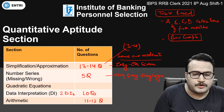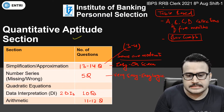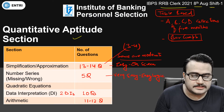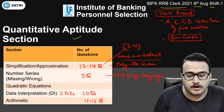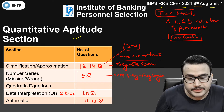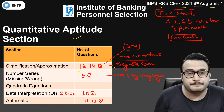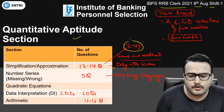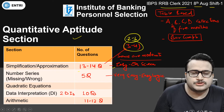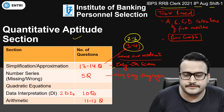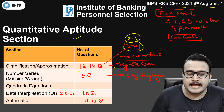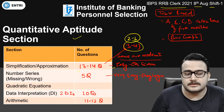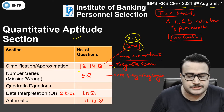For the Quantitative Aptitude section in RRB Clerk 2021, 8th August Shift 1 — simplification: we saw 13 to 14 questions were there for simplification. Only 3 to 4 questions were of easy to moderate level, whereas all the rest of the questions were of easy nature.